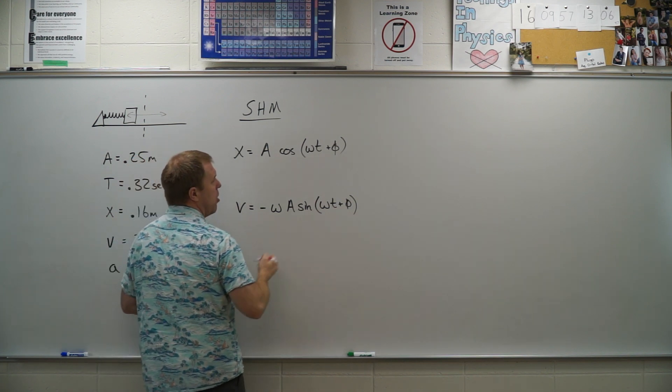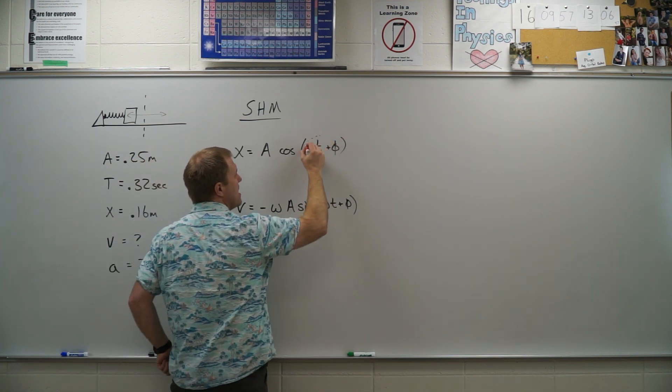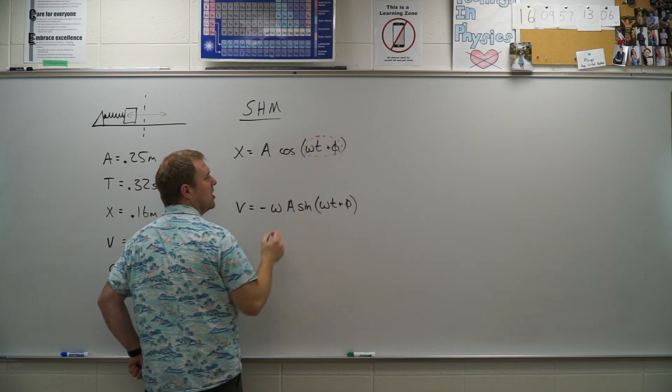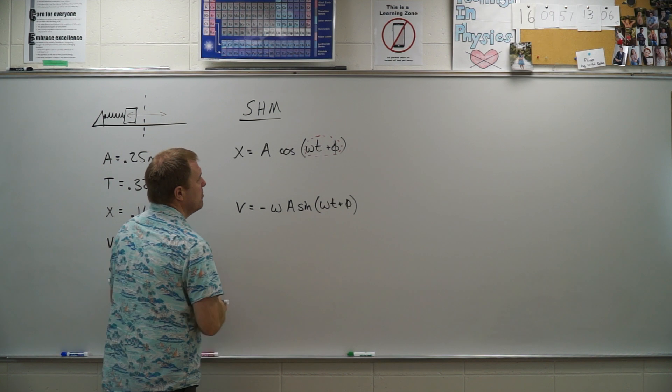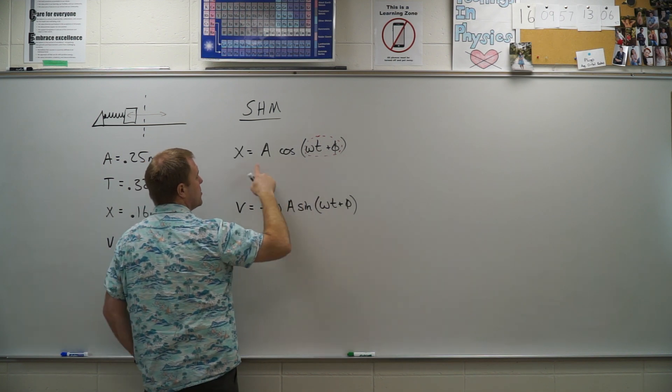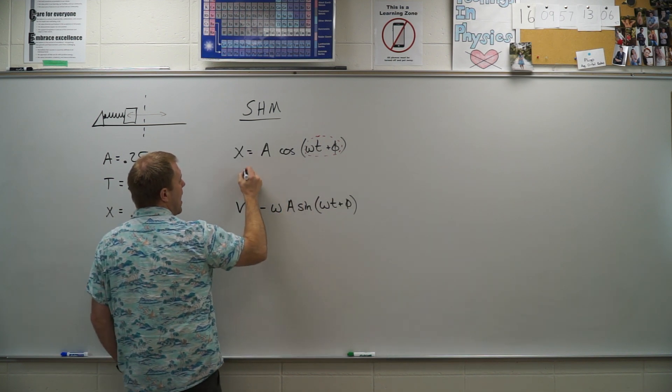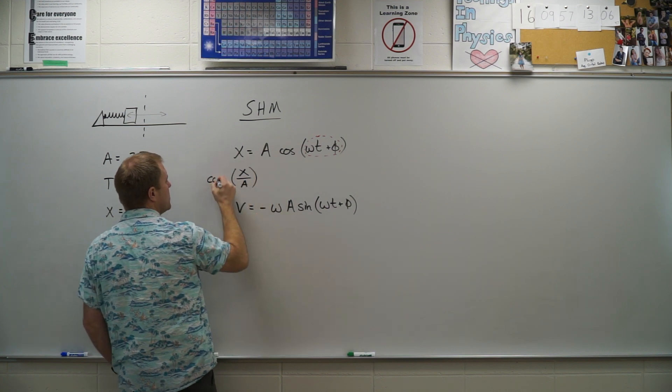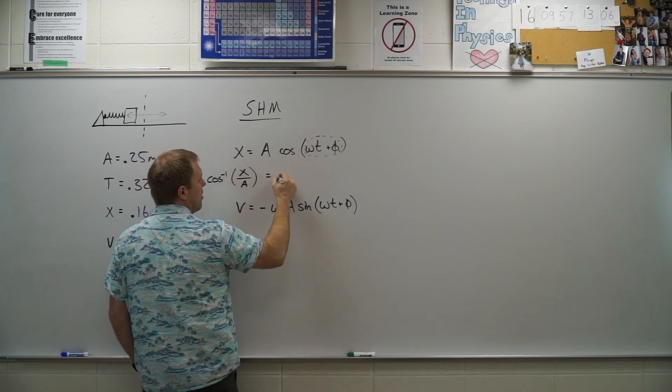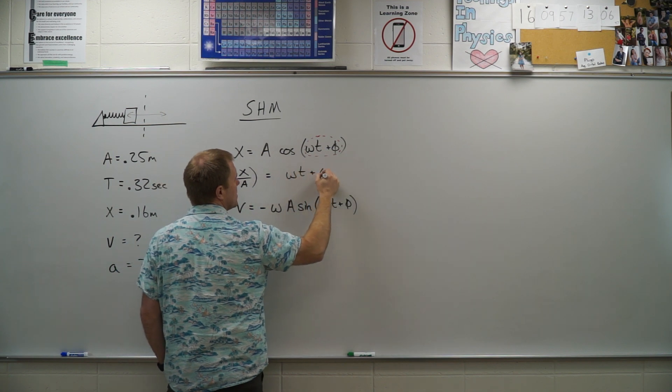I am actually going to group omega t plus phi into a single variable. So we're going to do a little tricky tiger trail here. So all I'm going to have to do is solve for that. So I'm going to move my x divided by A and then I'm going to take the inverse cosine of that and that will tell me what this omega t plus phi is.